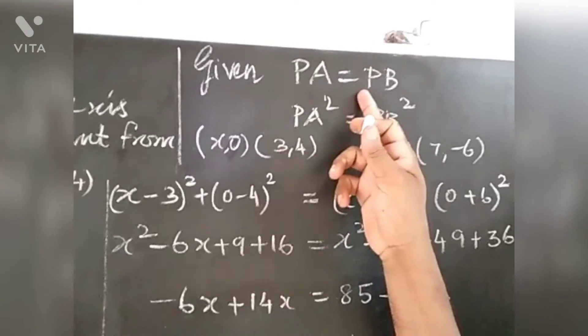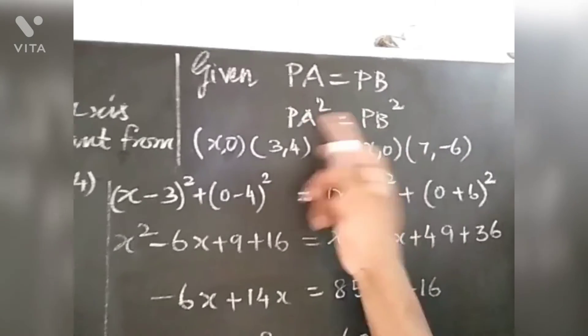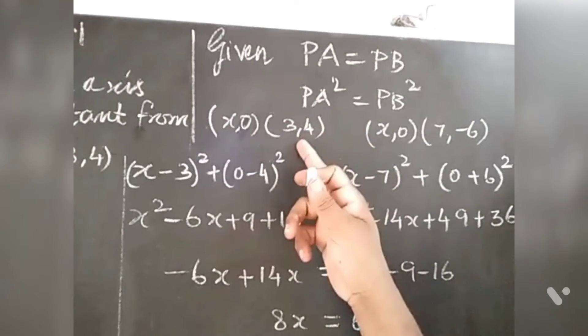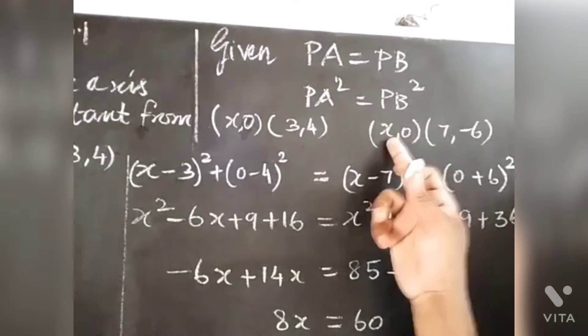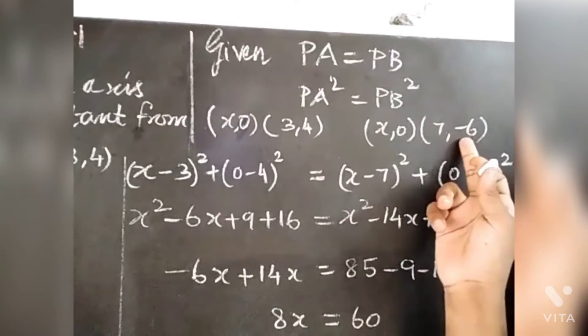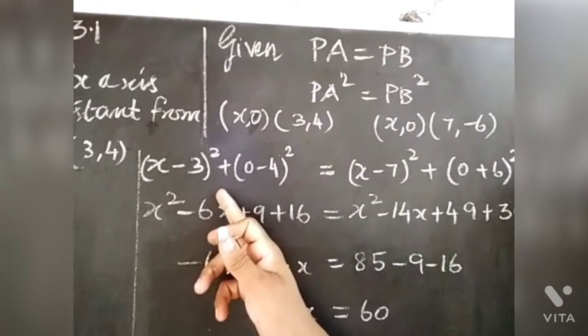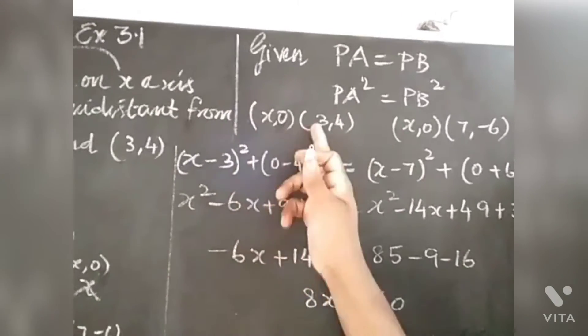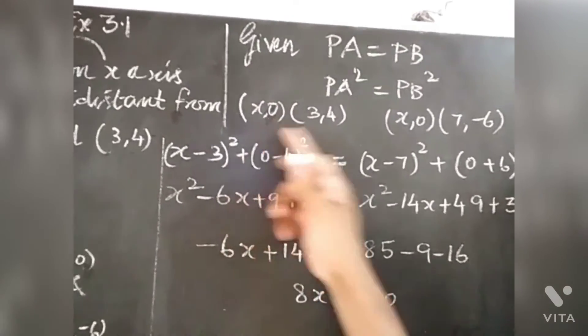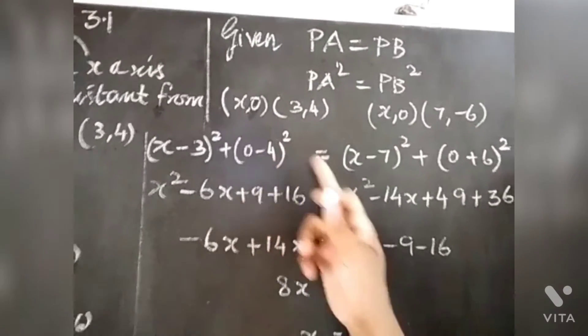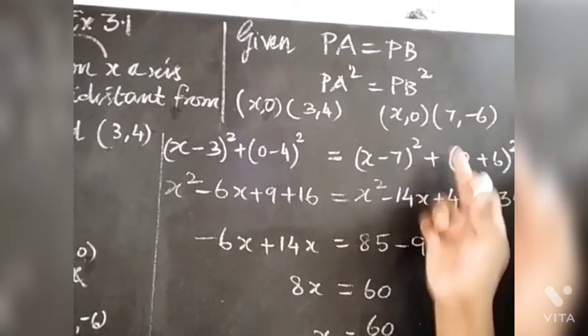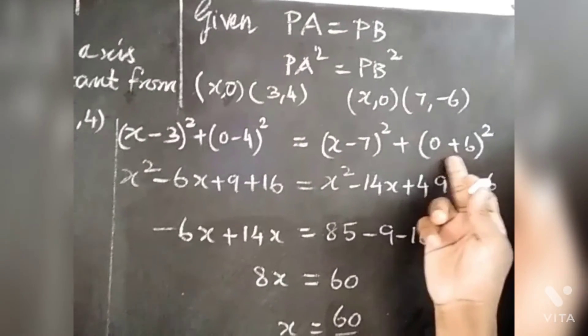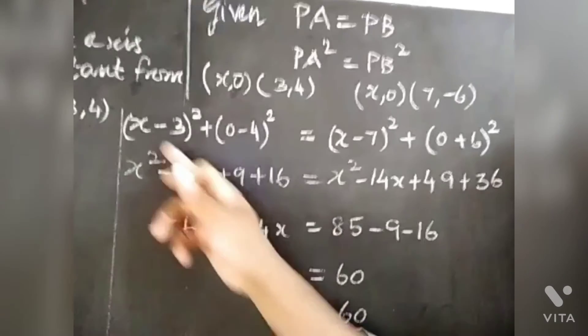PA squared is equal to PB squared. (x - 3)² + (0 - 4)² is equal to (x - 7)² + (0 + 6)² which is (0 - 6)².